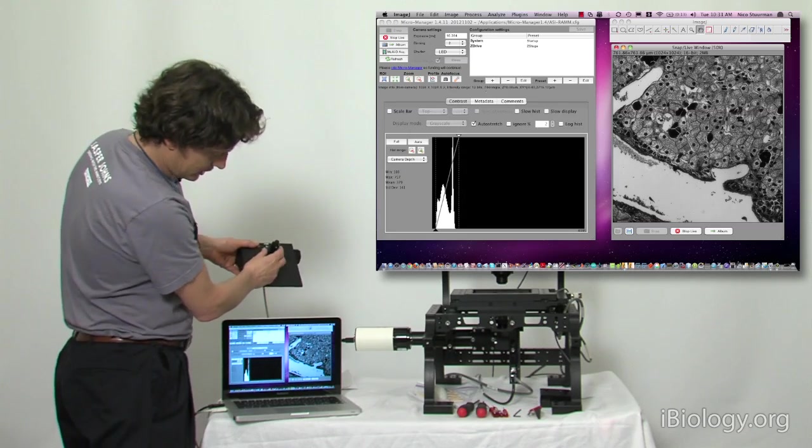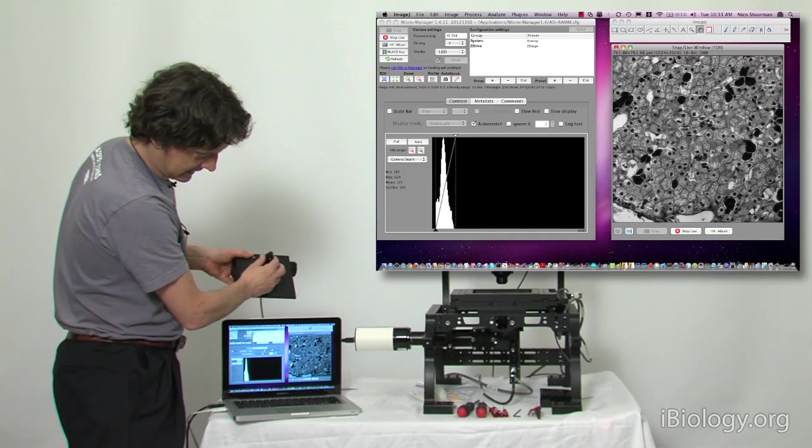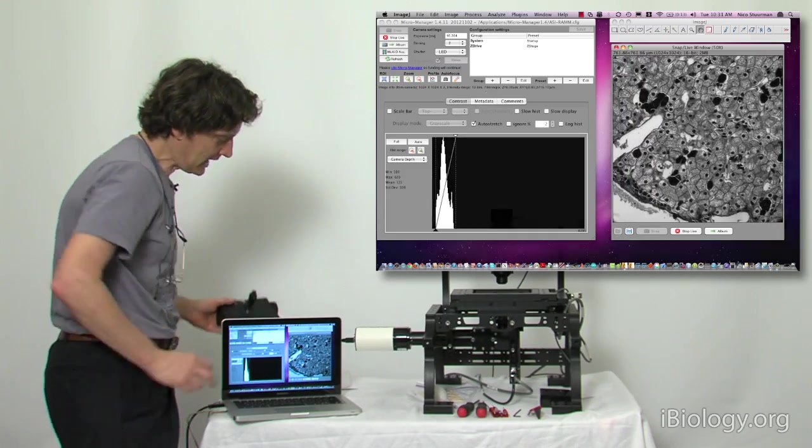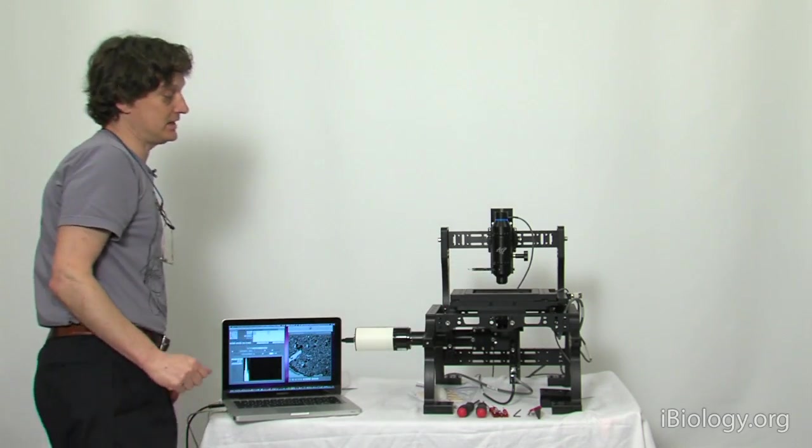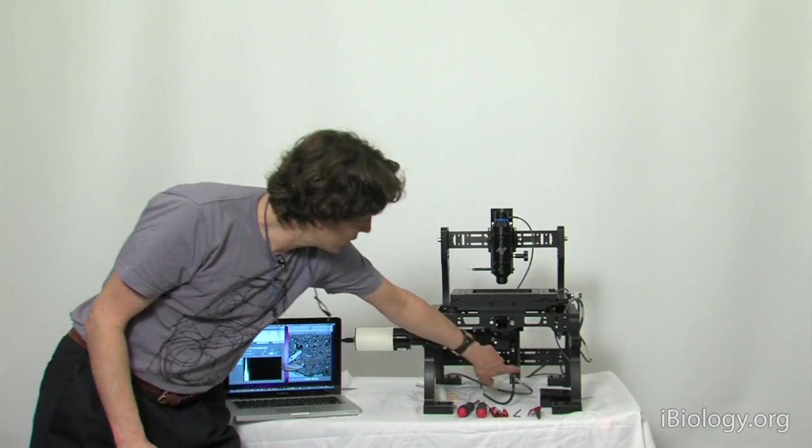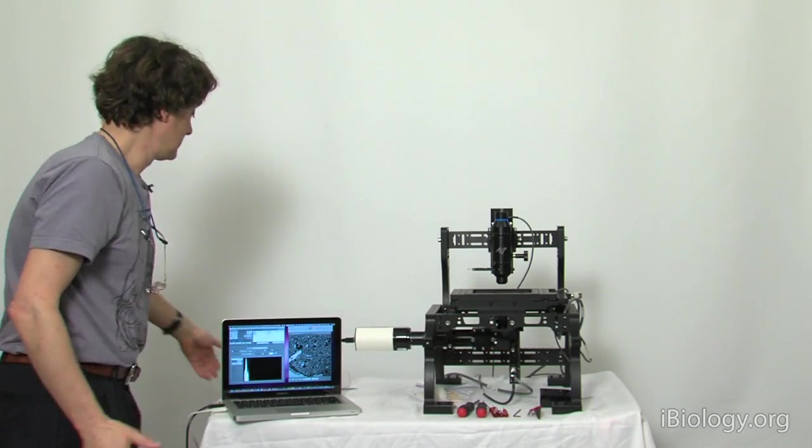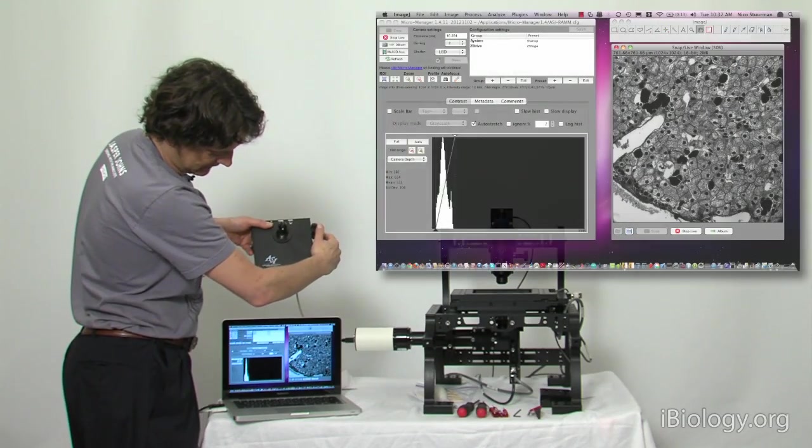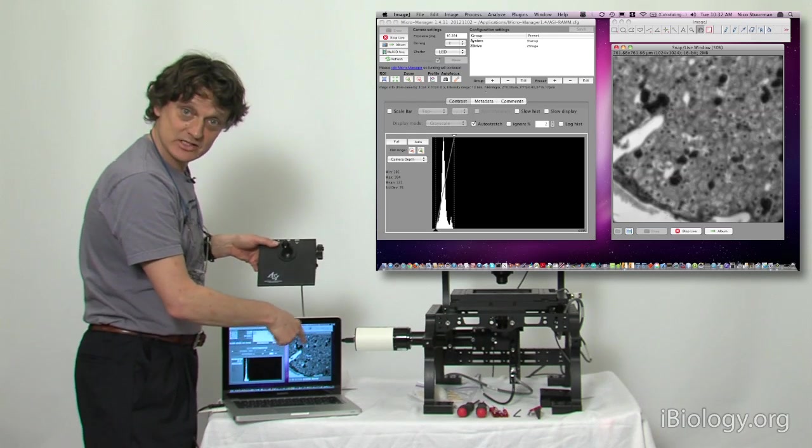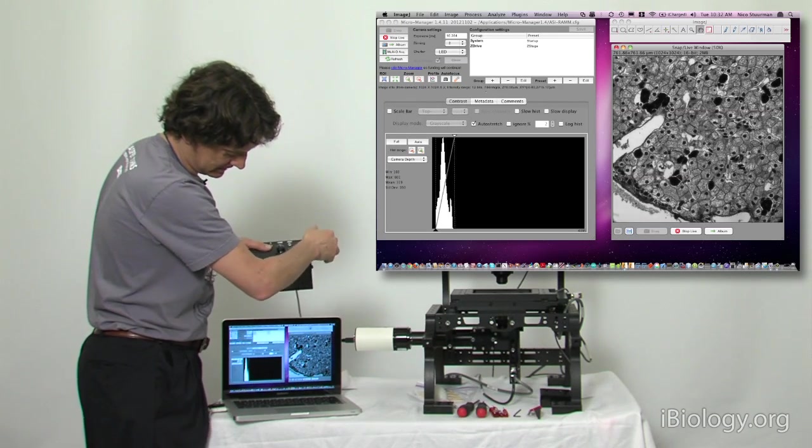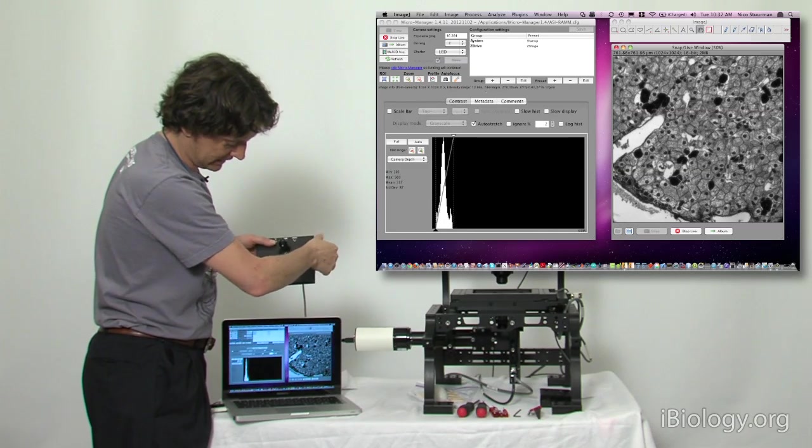I can use the joystick here to actually move the stage and it moves the sample. So we have a motorized XY stage here. On top of that, there's also a motor here that moves the objective, controlled with this wheel, and that can go up and down and change the focus of the sample on the screen.